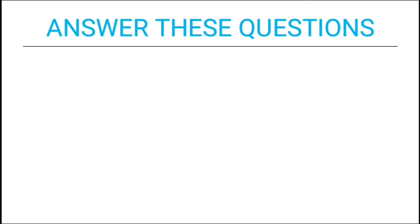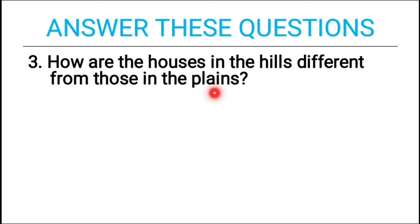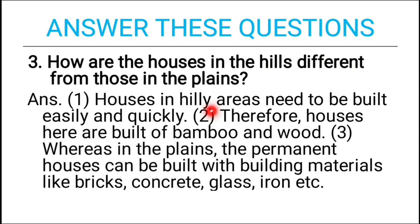Third long answer: how are the houses in the hills different from those in the plains? Houses in hilly areas need to be built easily and quickly; therefore, houses here are built of bamboo and wood. Whereas in the plains, permanent houses can be built with building materials like bricks, concrete, glass, iron, etc. In hilly areas, it is not practical to use heavy materials because conditions are not as safe, so it is very necessary to build with lighter materials that can be constructed easily and quickly.